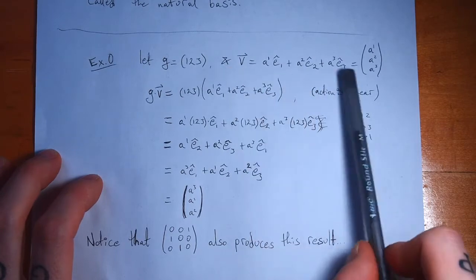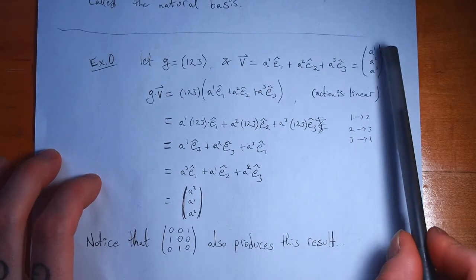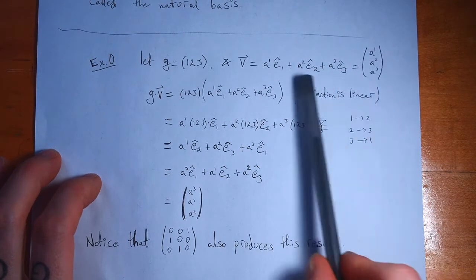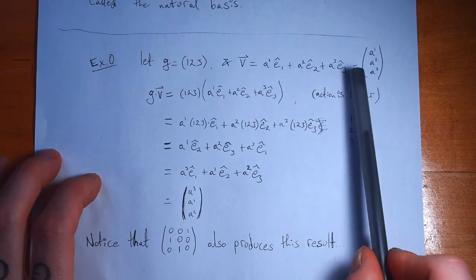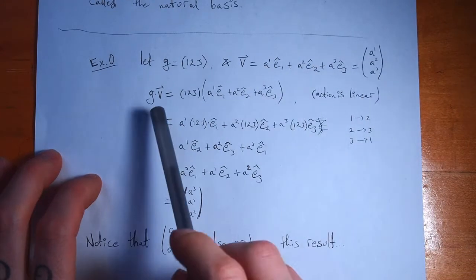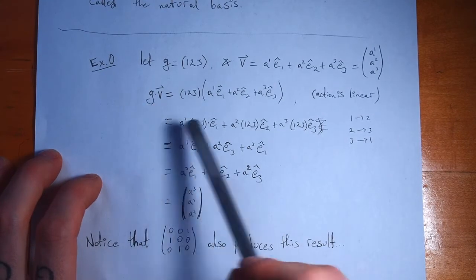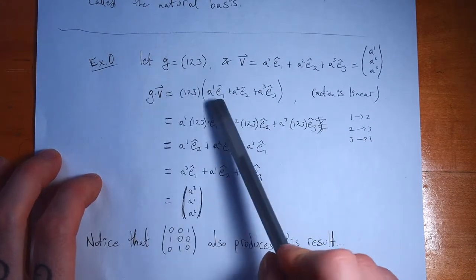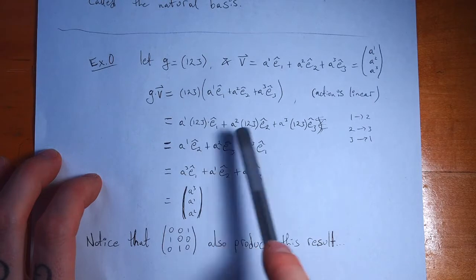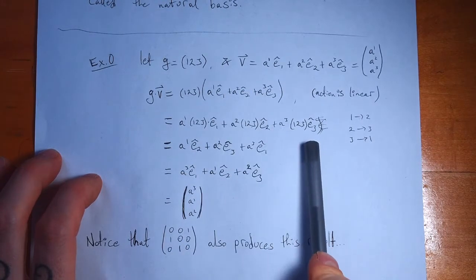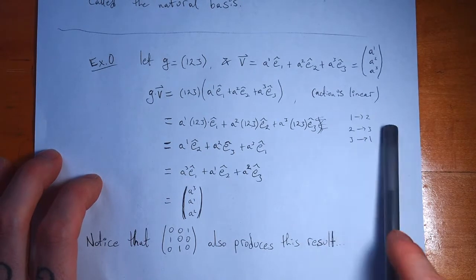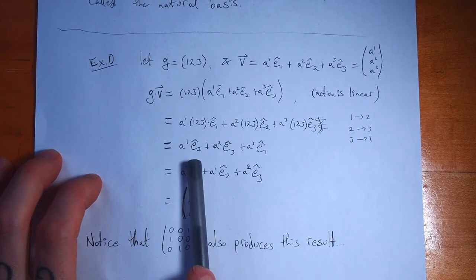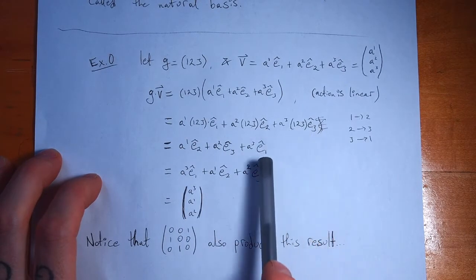So we have a three-dimensional vector space, and any arbitrary vector can be written as a linear combination of basis vectors. We might write it as a column with components, but really there's a sum with basis vectors hidden in there. When a group element acts on our vector, our action is always linear — that's one of the requirements of an FG module — so it distributes over the sum and we can factor out scalars. So we have (1,2,3) acting on each basis vector: 1 goes to 2, 2 goes to 3, 3 goes to 1. So the first basis vector becomes the second, the second becomes the third, and the third becomes the first.